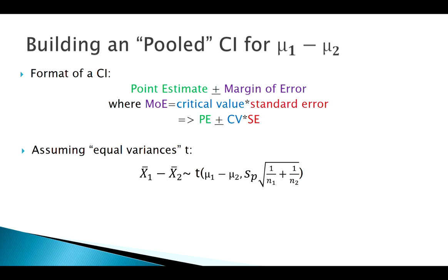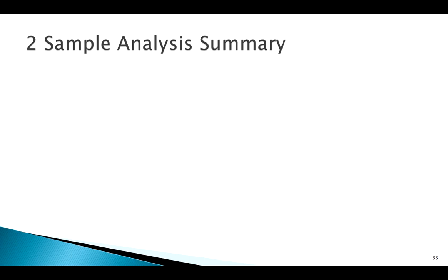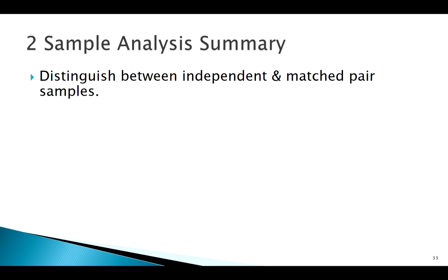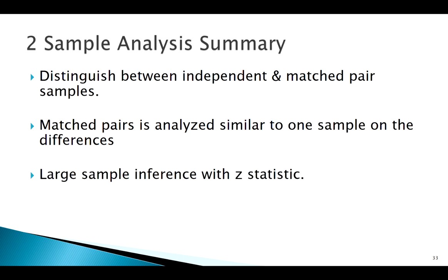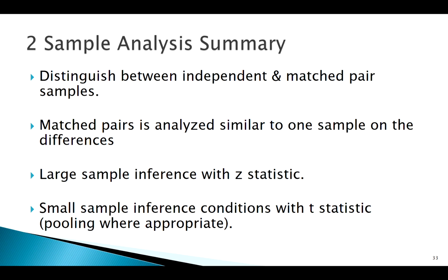Let's try to sum everything up with two samples. When you have two samples of quantitative data, first ask: is there a relationship? If you can match people up, treat it as matched pairs — the analysis is simpler because it reduces to a single-sample problem on the differences. If treating them as two independent samples, you might use Z, but most of the time you'll use a two-sample independent t-test. The default on most software is to treat them as unequal variances — don't pool — but pooling gives more precise results when appropriate.